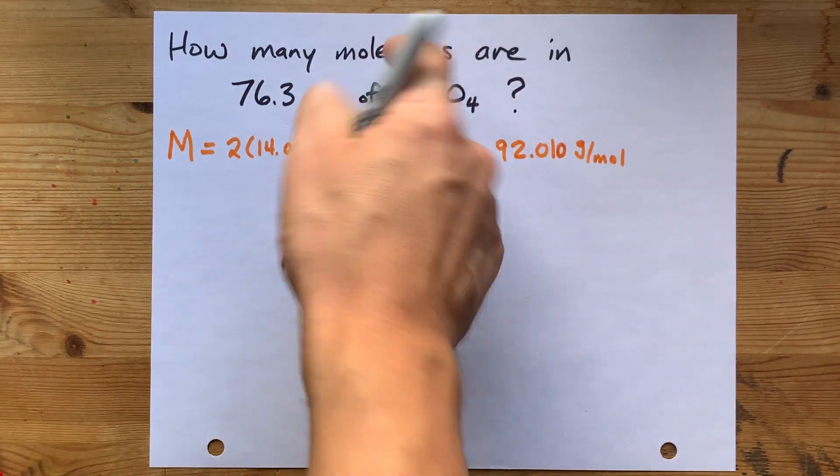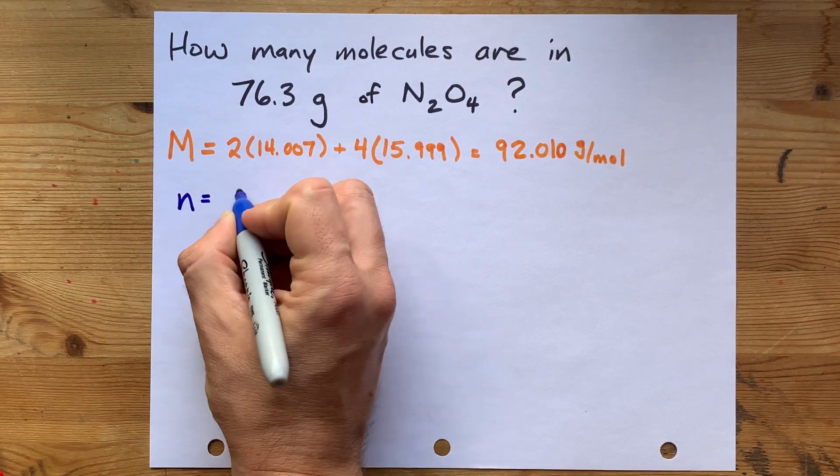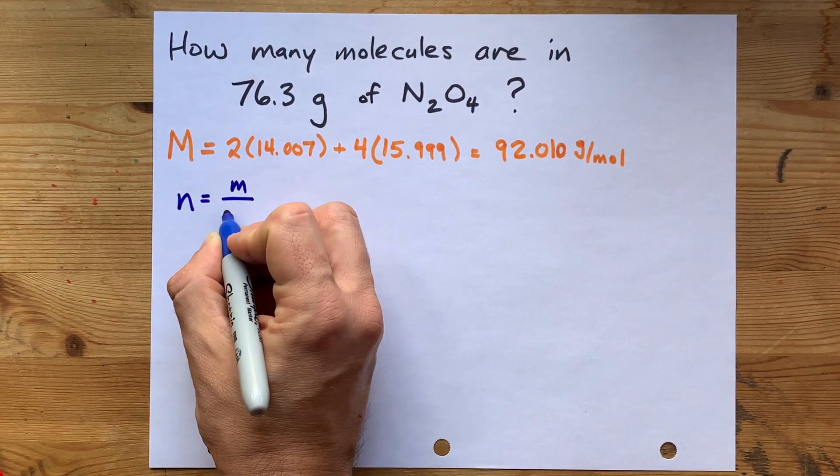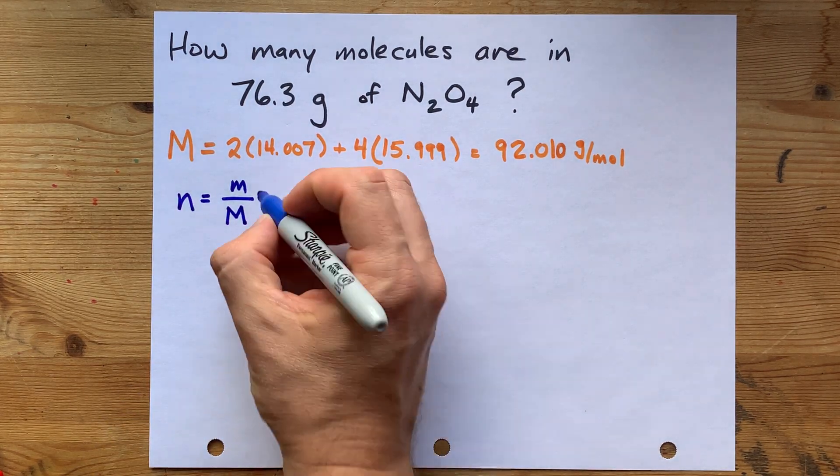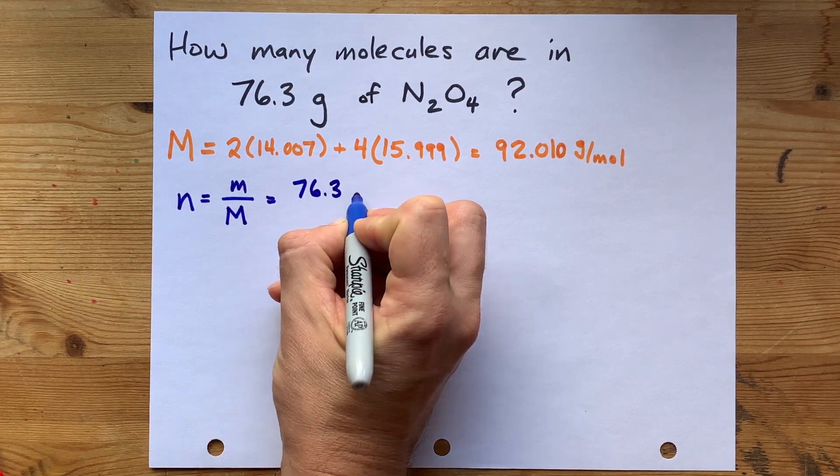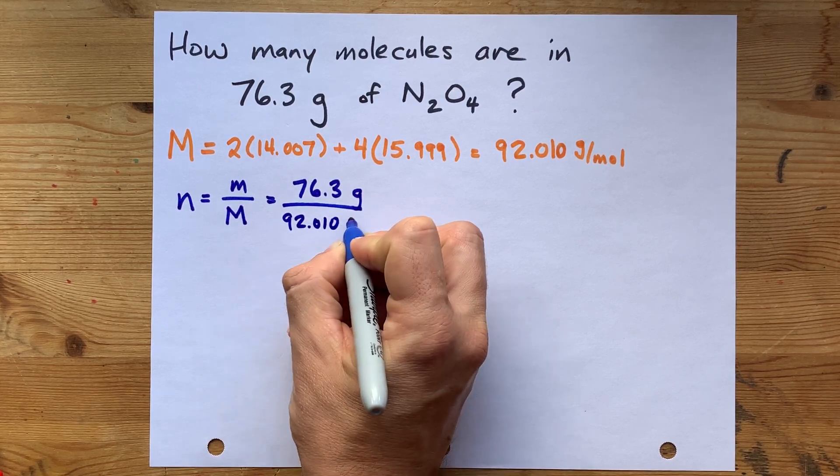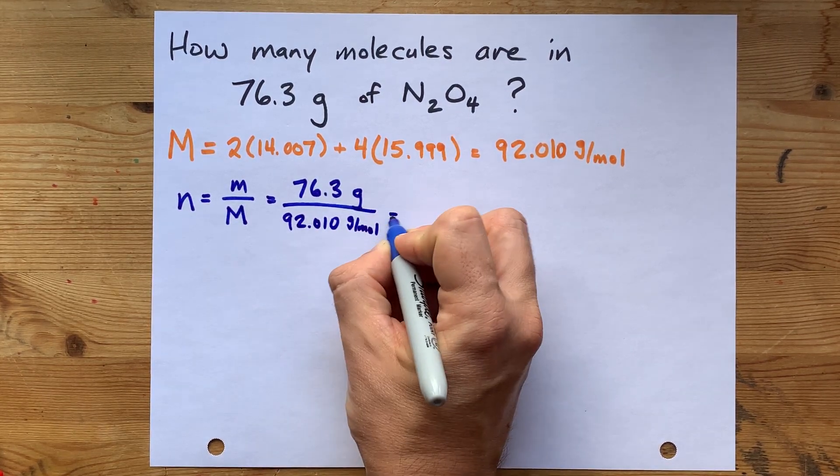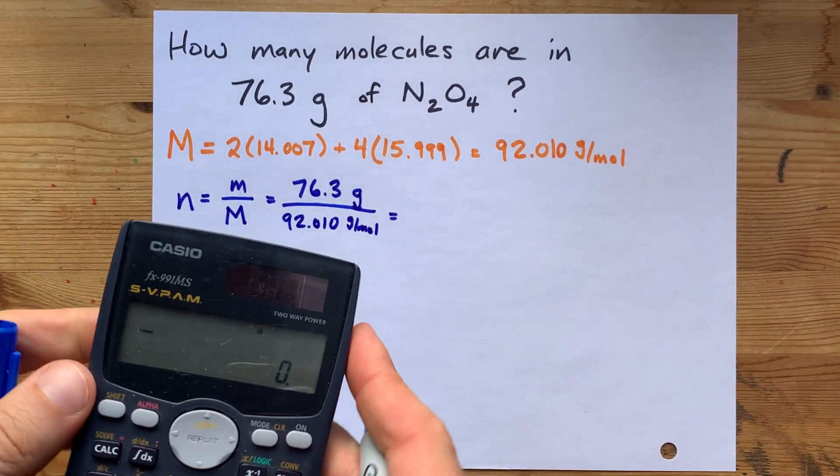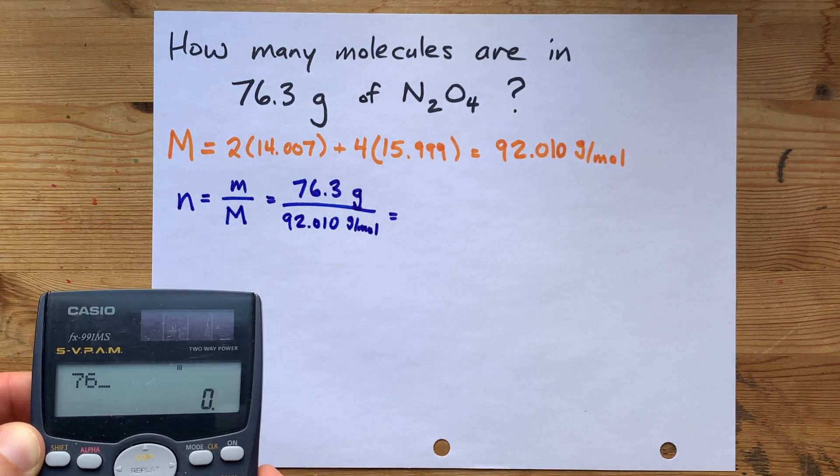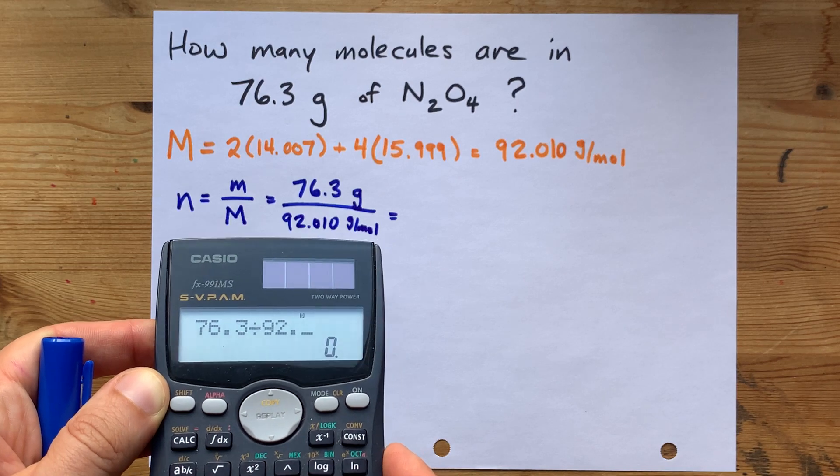In order to convert grams to molecules, you need to convert grams to moles first. Moles is grams divided by the molar mass of the compound, if you're familiar with that formula. Again, it is the grams that you were given divided by the molar mass of the compound. Now, I'm writing the units here because when I was teaching chemistry, teachers liked to see that.